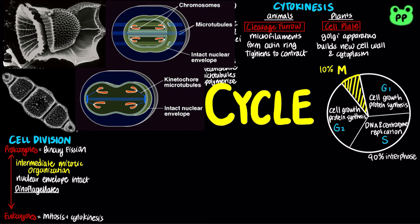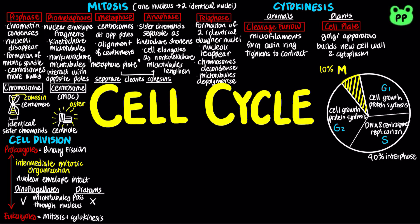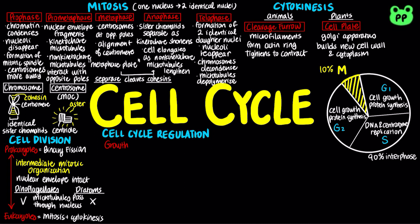In both dinoflagellates and diatoms, the nuclear envelope remains intact during mitosis. In dinoflagellates, the microtubules pass through the nucleus, while in diatoms, the microtubules form within the nucleus, similar to human cells. The frequency of cell division varies with the type of cell, which results from regulation at the molecular level.